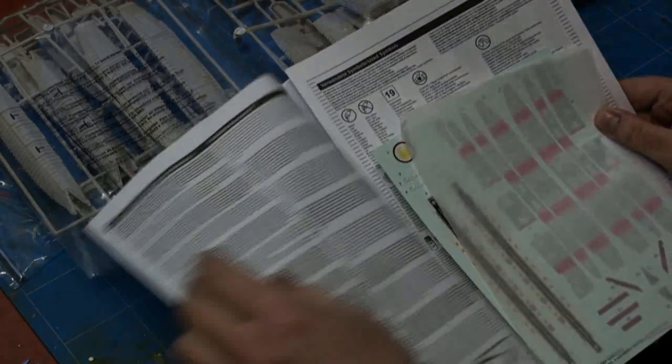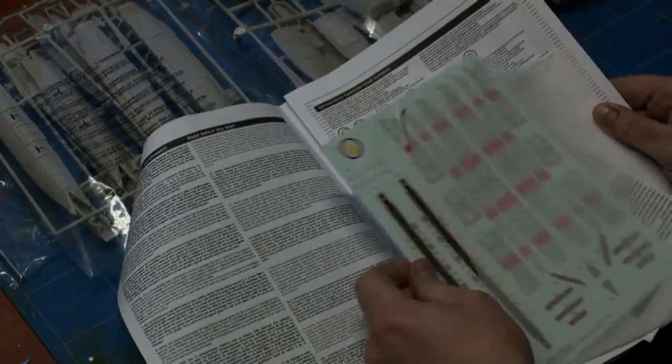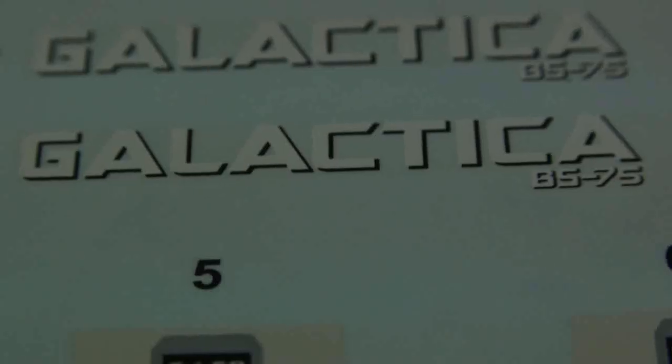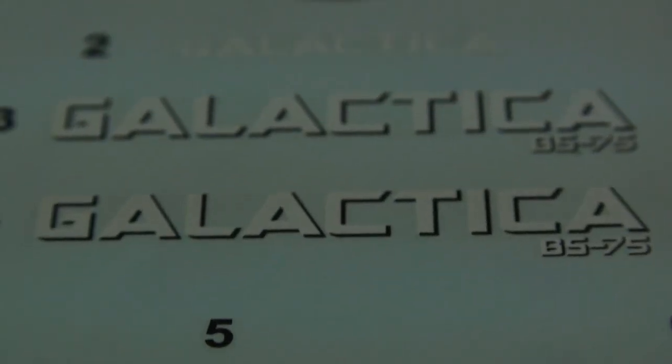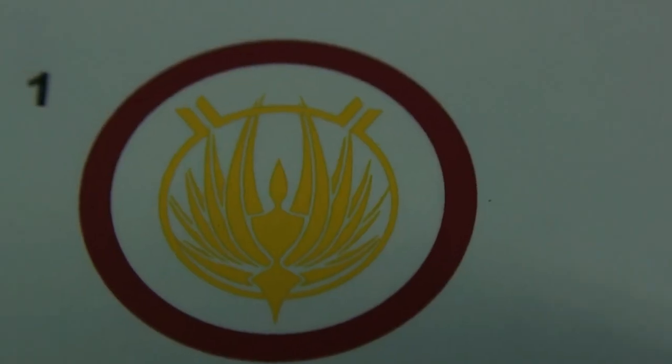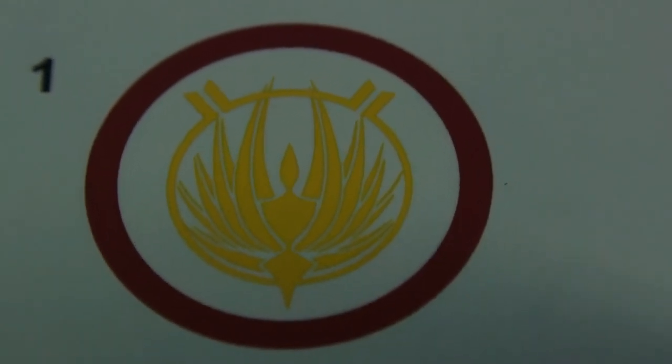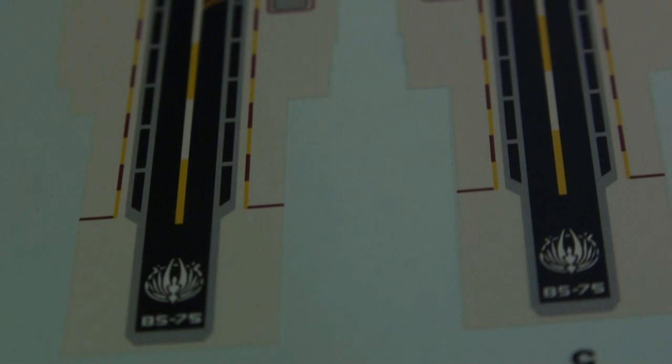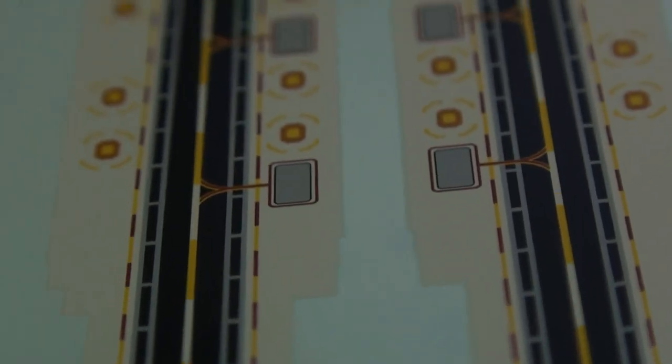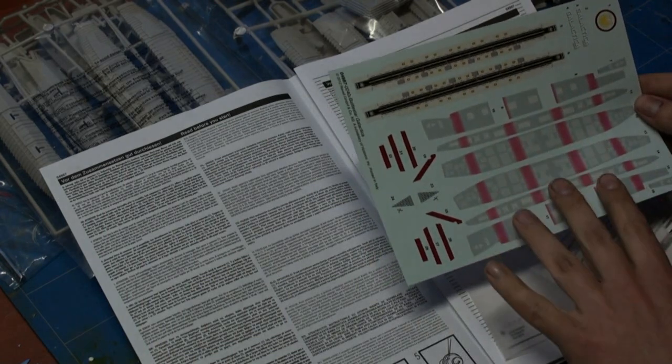These are the decals for the Revell version. Here is the Galactica logo, the insignia that goes on the top, the landing strips which can be lighted. These sections are to be glued in the inside of the area where the landing bays are retracted.